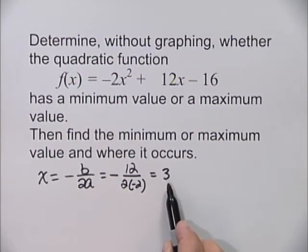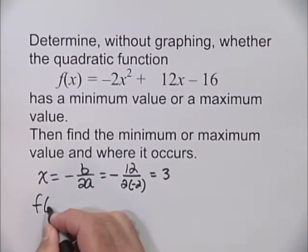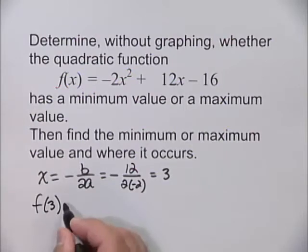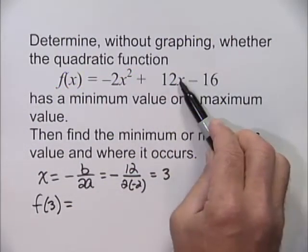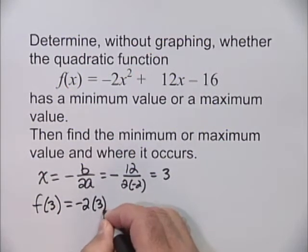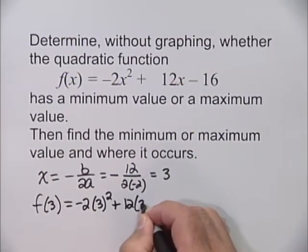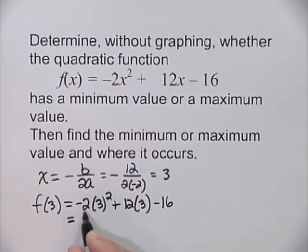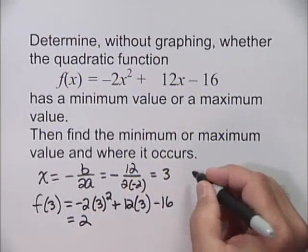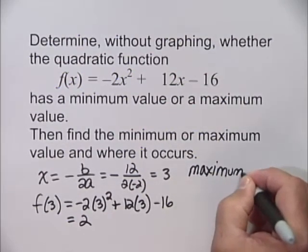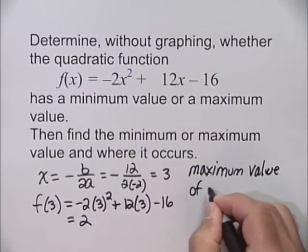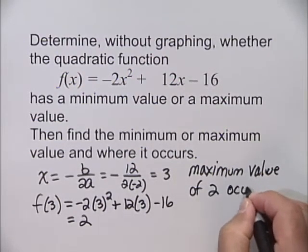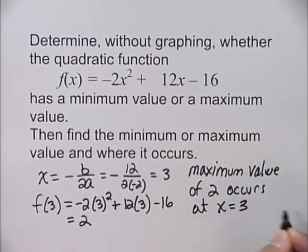To find the actual maximum value, that would be the y-coordinate, which in terms of f(x) would be f(3). So we substitute 3 in place of x: -2(3)² + 12(3) - 16. When we evaluate that expression, we find that f(3) = 2. That means the maximum value of 2 occurs at x = 3.